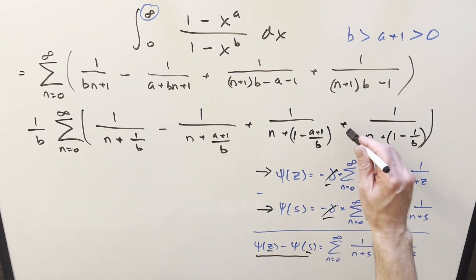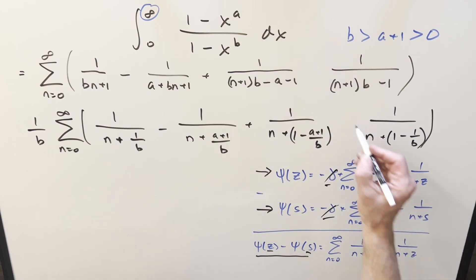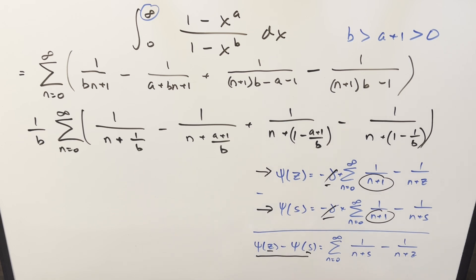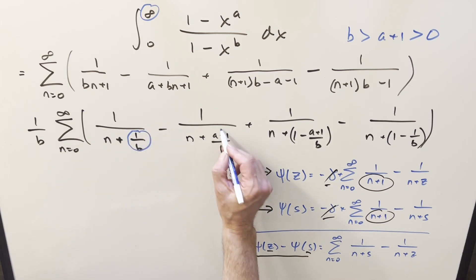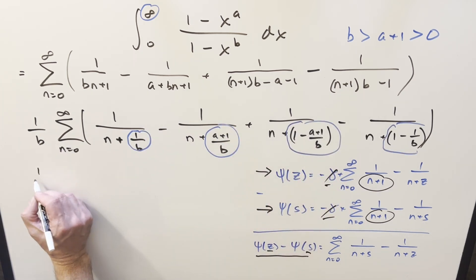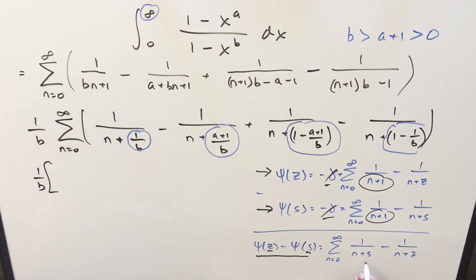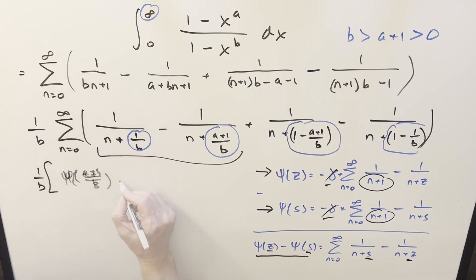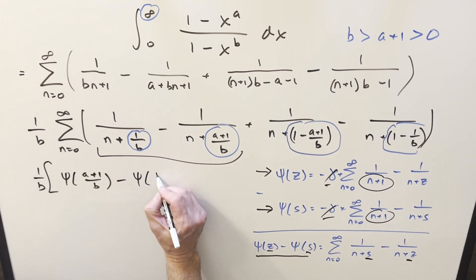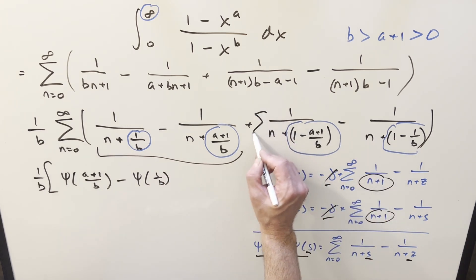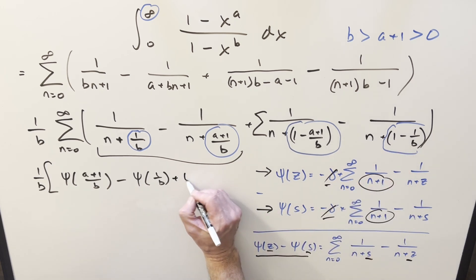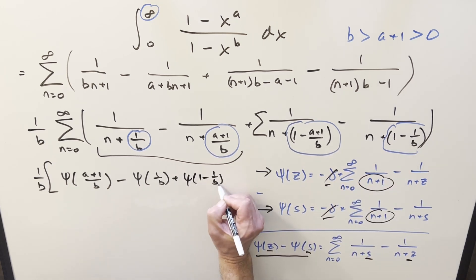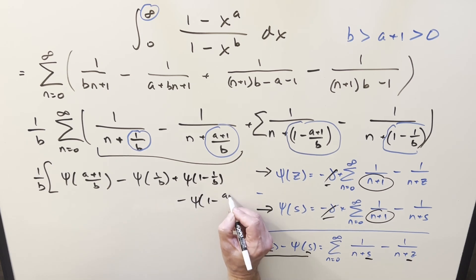There should be a minus sign that was carried forward incorrectly — correcting this, we can now break the expression into two sums. Using the digamma difference formula with input (a plus 1)/b for the first piece and 1/b for the second, and noting the swapped order of z and s, the first part becomes digamma of (a plus 1)/b minus digamma of 1 plus b, and the second part becomes digamma of (1 minus 1/b) minus digamma of (1 minus (a plus 1)/b).